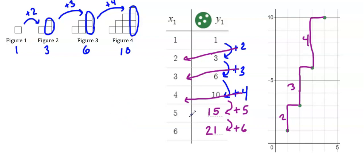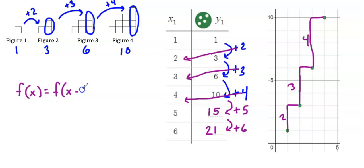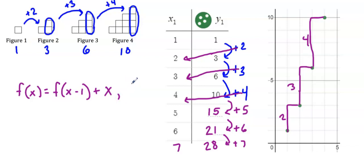Recursively, what I'm adding each time from the previous term is just the value of x. For example, when I want to get to the sixth term, I add six to the previous term. So recursively, I take the previous term f(x − 1) and add x. To get to the seventh term, I take the previous value of 21 and add seven to get 28. I also need to include where I started, so f(1) equals one.